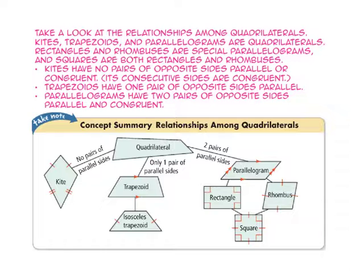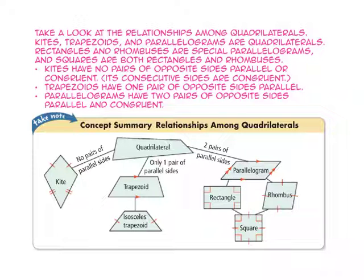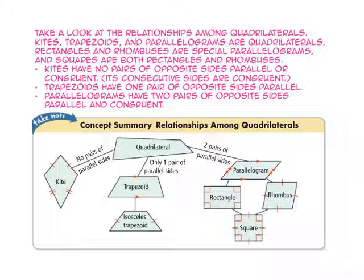Take a look at the relationships among quadrilaterals. Kites, trapezoids, and parallelograms are all quadrilaterals. Rectangles and rhombuses are special types of parallelograms, and squares are both rectangles and rhombuses. Kites have no pairs of opposite sides that are parallel or congruent — it's the consecutive sides that are congruent. Trapezoids have one pair of opposite parallel sides, and parallelograms have two pairs of opposite sides that are both parallel and congruent.